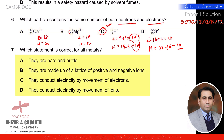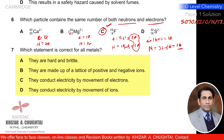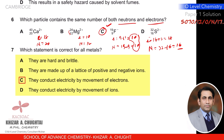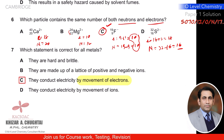Question seven: which statement is correct for all metals? They are hard and brittle — no. They are made of positive and negative ions — no. They conduct electricity by movement of electrons — yes. They conduct electricity by movement of ions — no. All metals conduct electric current due to the movement of free electrons; this is the common feature. So C is the correct option.